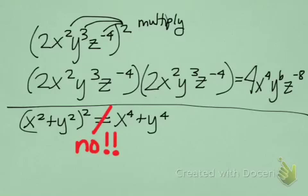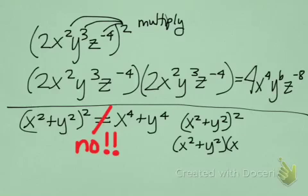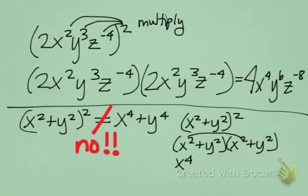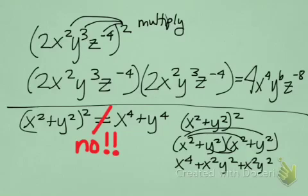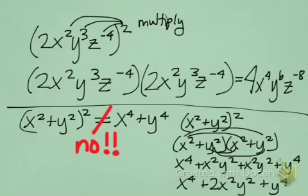Whenever you have a sum that's being squared, you have to expand it and then multiply it out. So x squared times x squared is x to the 4th. x squared times y squared is x squared y squared, and again, and then y squared times y squared is y to the 4th. When we combine like terms we get x to the 4th plus 2x squared y squared plus y to the 4th.